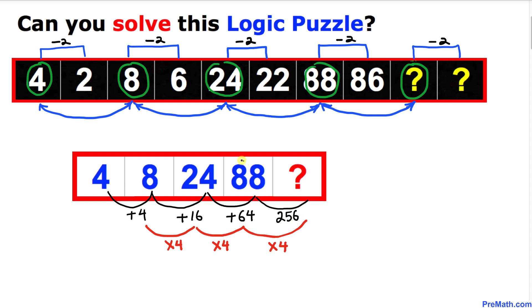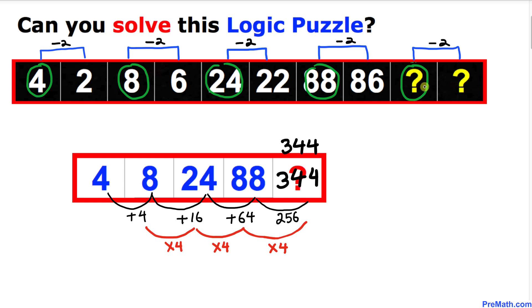That means now we are going to add 88 plus 256 and that is going to give us 344. So the number at this question mark turns out to be 344.